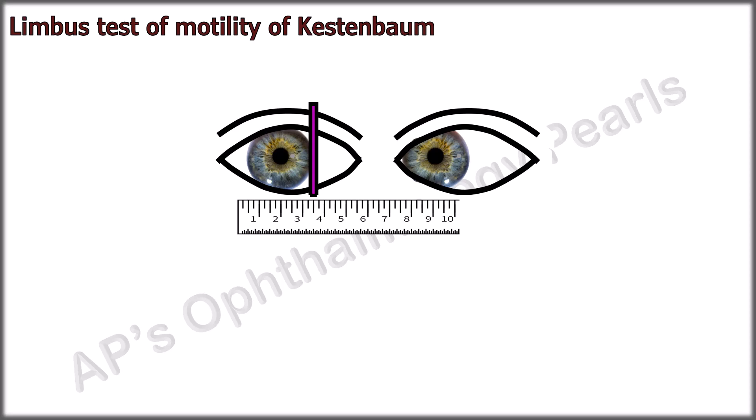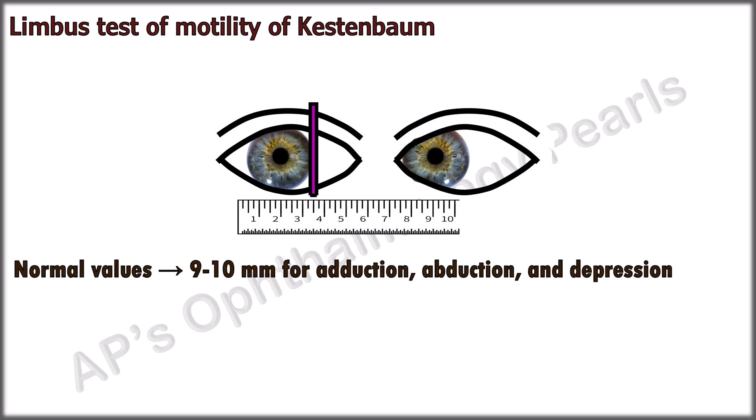For adduction, the movement of the nasal limbus is noted. For elevation, the inferior limbus, and for depression, the superior limbus. For vertical movements, the ruler is placed vertically. The normal values are 9 to 10 millimeters for abduction, adduction, and depression, and 5 to 7 millimeters for elevation.